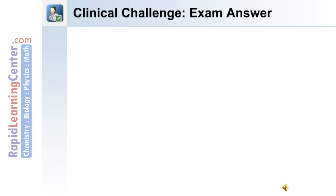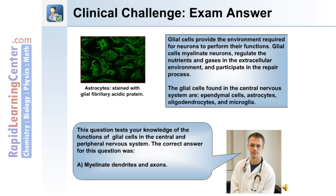Here's the answer to the question. This question tests your knowledge of the functions of glial cells in the central and peripheral nervous system. The correct answer was A, myelinate dendrites and axons. Glial cells do not myelinate dendrites, only the axon of a neuron.